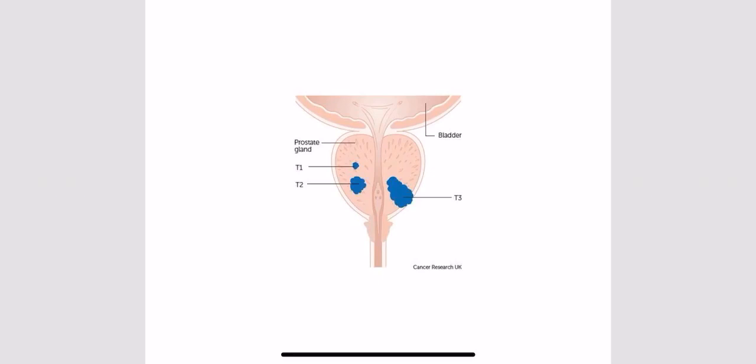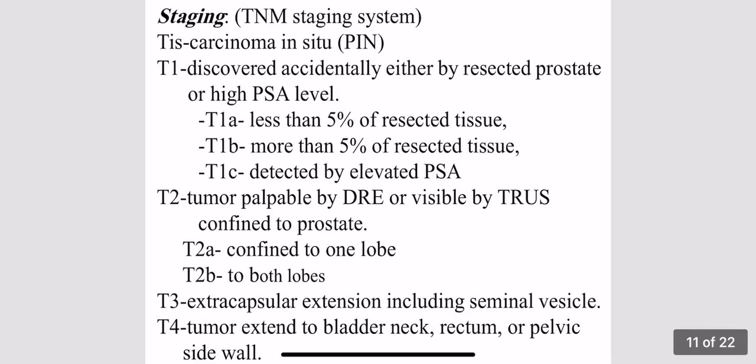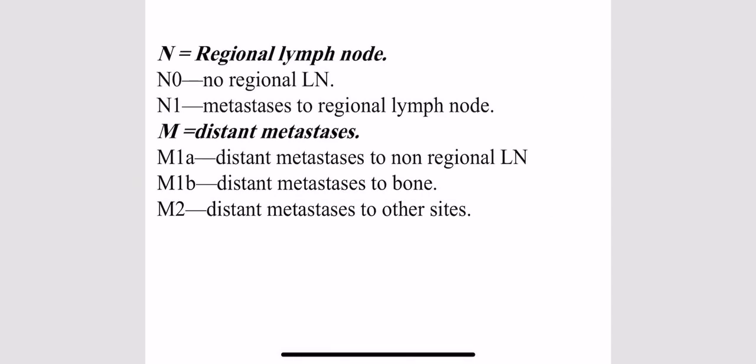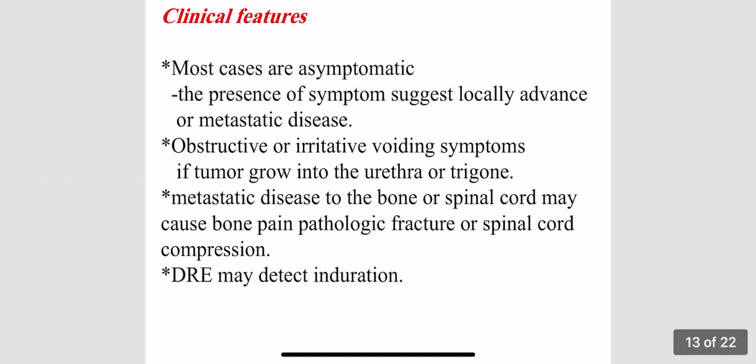T2 is tumor confined within the prostate: T2a affects one lobe, T2b is more than one lobe. T3 is extracapsular extension, usually involving the seminal vesicles. T4 is tumor extending to adjacent tissue such as the bladder neck, rectum, or pelvic sidewall. N1 is regional lymph node involvement. M1a is distant non-regional lymph node metastasis, M1b is bone metastasis, and M2 indicates other distant metastasis.